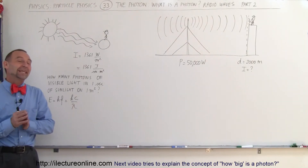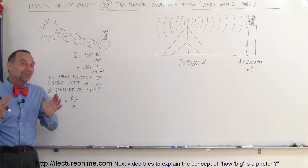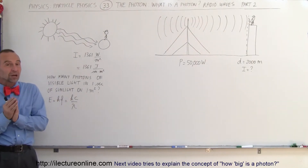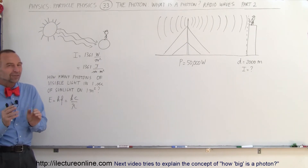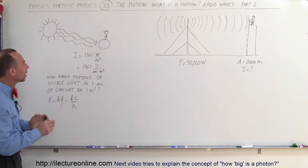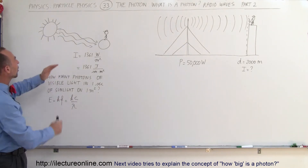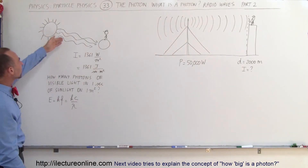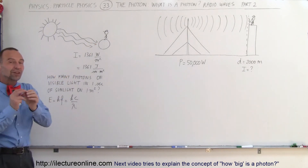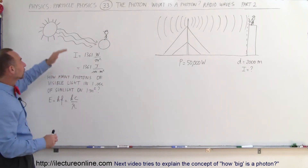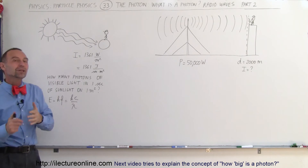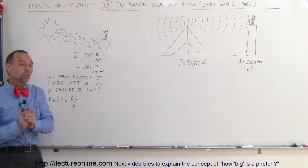Welcome to ElectronLine. To understand photons a little bit better, especially when we talk about radio waves, let's calculate the number of photons that we receive for every square meter surface on the Earth — sunlight coming from the Sun from a distance of 93 million miles away.